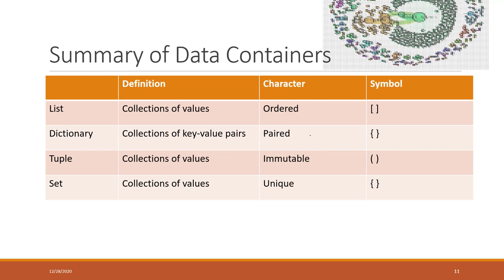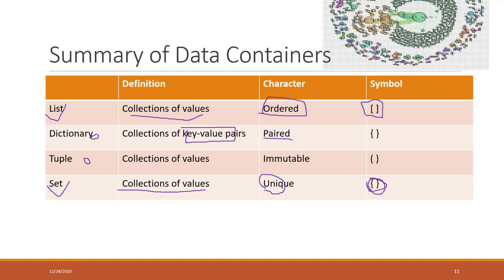To summarize the data containers: List is an ordered collection of values, defined with square brackets. Set is a collection where all items must be unique, defined with curly brackets. Next we'll talk about dictionaries — collections of key-value pairs, also using curly brackets — and tuples, which are similar to lists but immutable, meaning items cannot be changed, defined with parentheses.